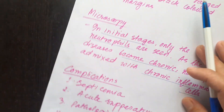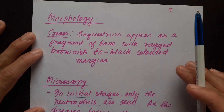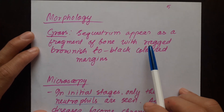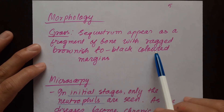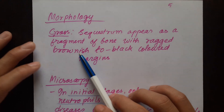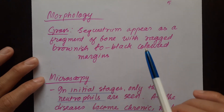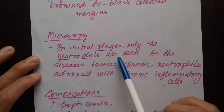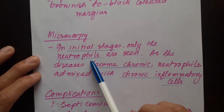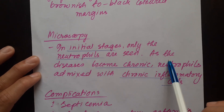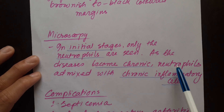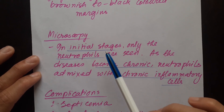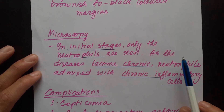Now let's see morphology. Gross: sequestrum appears as a fragment of bone with a brownish to black color. Microscopy: in the initial stage only neutrophils are seen; as the disease becomes chronic, neutrophils are mixed with chronic inflammatory cells. So in the initial stage we see neutrophils, and later we see both neutrophils as well as chronic inflammatory cells.